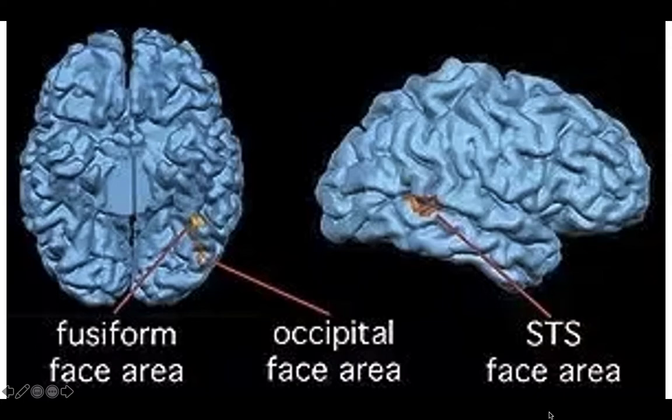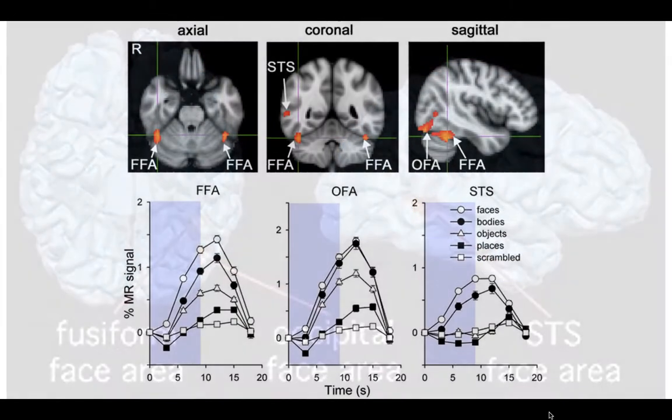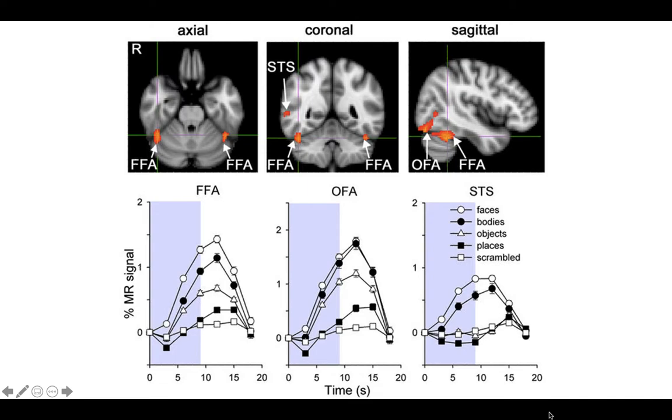The occipital face area is the first stop of visual facial information and processes parts of faces. The fusiform face area discriminates between objects of a highly specialized category, such as faces. The superior temporal sulcus has to do with the social component of facial stimuli, including higher order cues such as empathy.